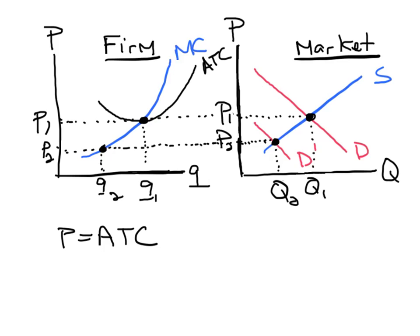Now, the problem here is that now the price is less than the average total cost. The average total cost is up here and the price is down here. So this is a situation now, a short run situation, because now the price is less than the average total cost. And that means that the typical firm in this industry is having economic losses.